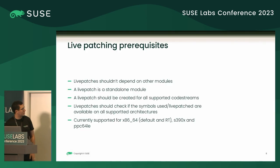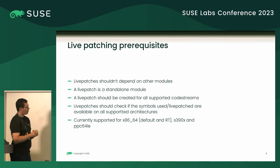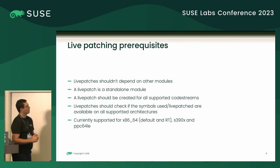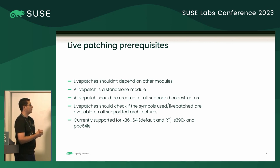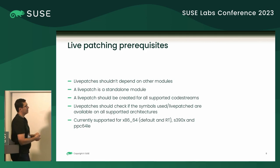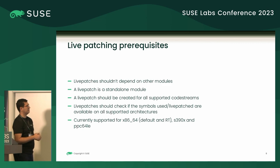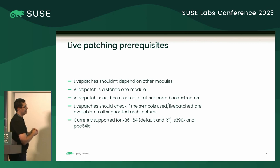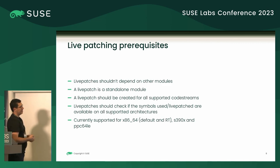So livepatch prerequisites and tooling. The first is that a livepatch shouldn't depend on other modules — we shouldn't require the customer to load additional modules. A livepatch is a standalone module, just a normal .ko file. We should create a livepatch for all supported code streams. Currently we support 69 different code streams, though that changes day to day as they go out of support. Livepatches check if the symbols used are available on all supported architectures. We currently support x86 default and RT, S390, and PPC64.